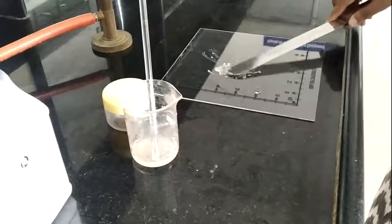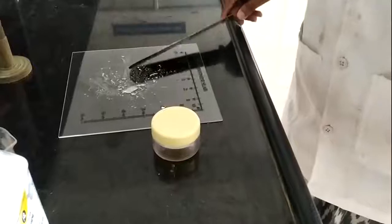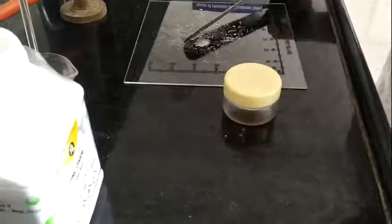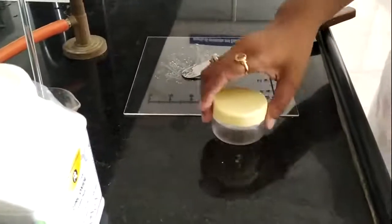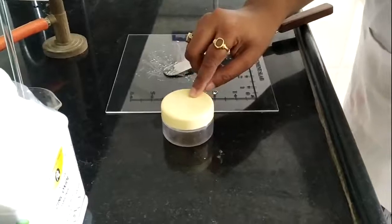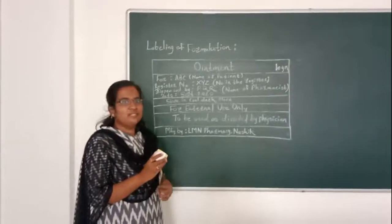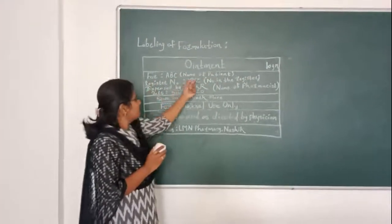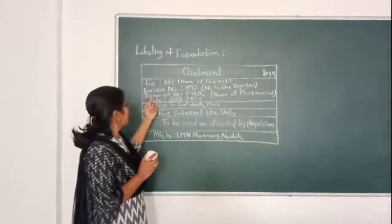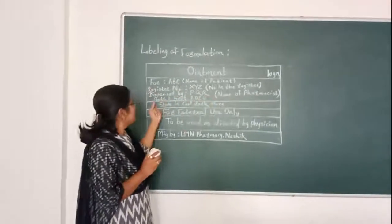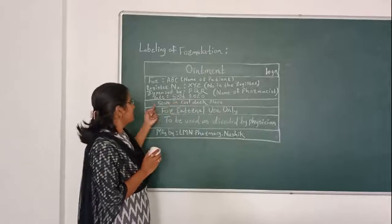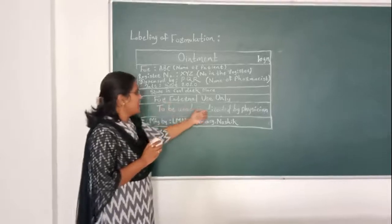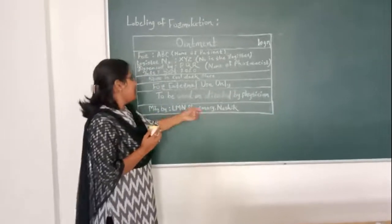After proper lavigation of the zinc oxide with the simple ointment, I am now transferring it into the container. For labeling: ointment 10 g, name of patient ABC, register number XYZ, dispensed by PQR (name of pharmacist), date September 2020, storage condition — for external use only, to be used as directed by physician, manufactured by the college pharmacy.